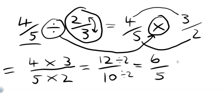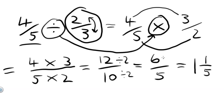Now you might be asked to change that to a mixed fraction. All that means is that you have to put a whole number out the front. So you have to ask yourself: how many times does 5 go into 6? Well only once, so 1 will be out the front. What's the remainder? 6 divided by 5 is 1 with a remainder of 1. So we put that as the numerator and keep the same denominator. So 6 over 5 is the same thing as 1 and 1 fifth.